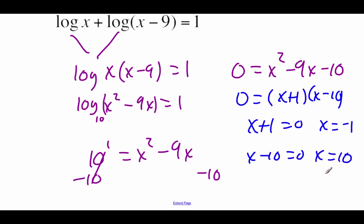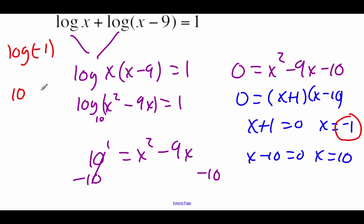Now if we were to actually check our answers on this one, that would mean plugging each of these x values in to make sure we actually get an answer back. We run into a little bit of an issue if we try to plug in negative 1, because when we do the log of negative 1, negative numbers don't fall in the domain of logarithms — there's no power of 10 that'll land us at a negative 1 answer. So negative 1 isn't actually a solution to this equation, but 10 will end up working.